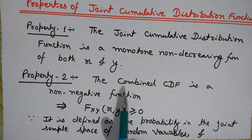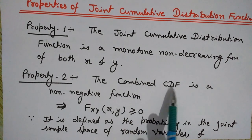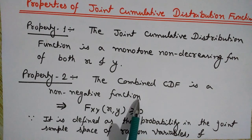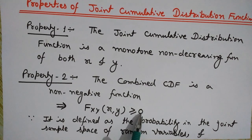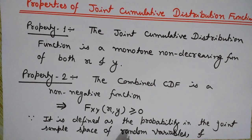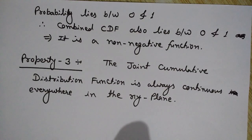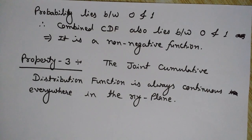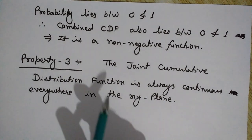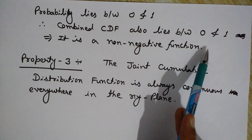Property number two: the combined CDF, that is the joint CDF, is a non-negative function. Mathematically, F_XY(x, y) is greater than or equal to 0. It is defined as a probability in the joint sample space, and since probability lies between 0 and 1, the joint CDF is also guaranteed to be non-negative.